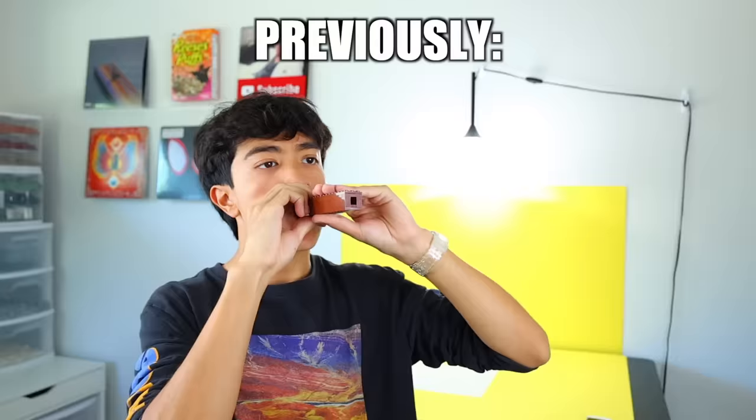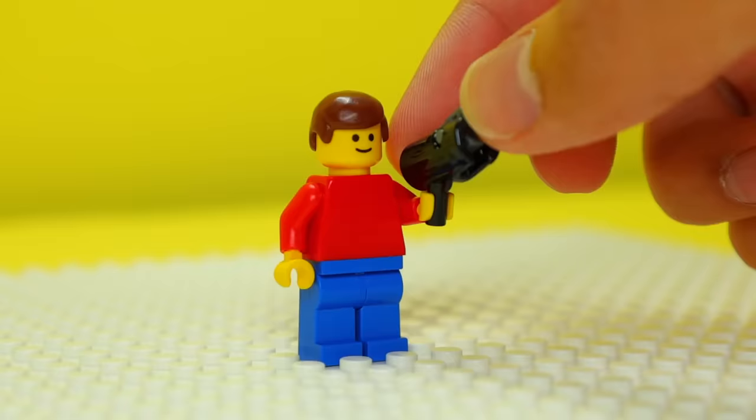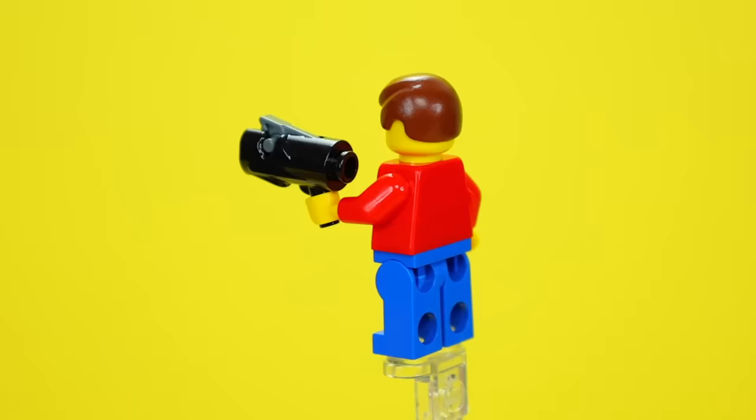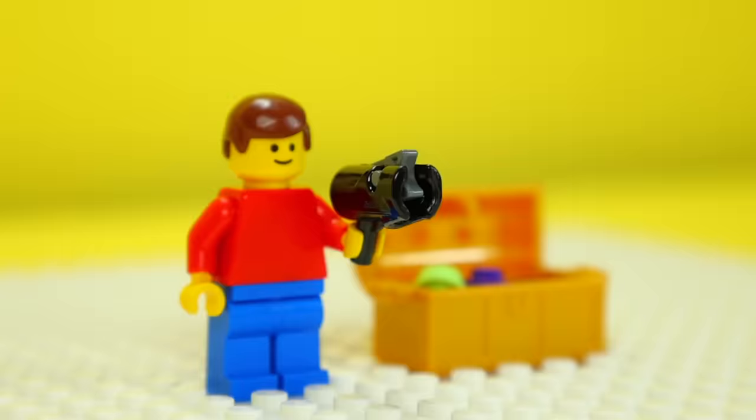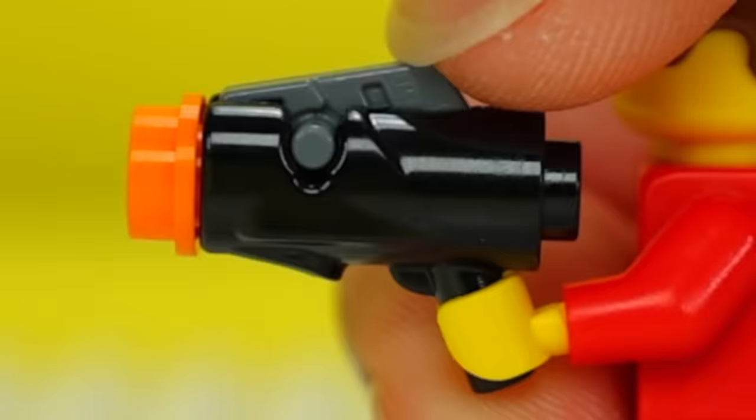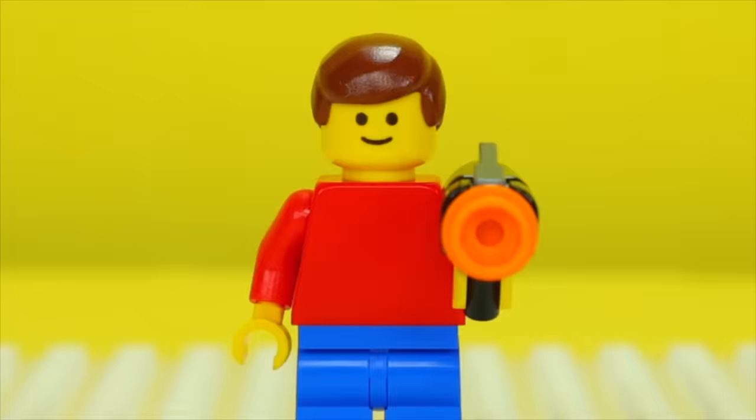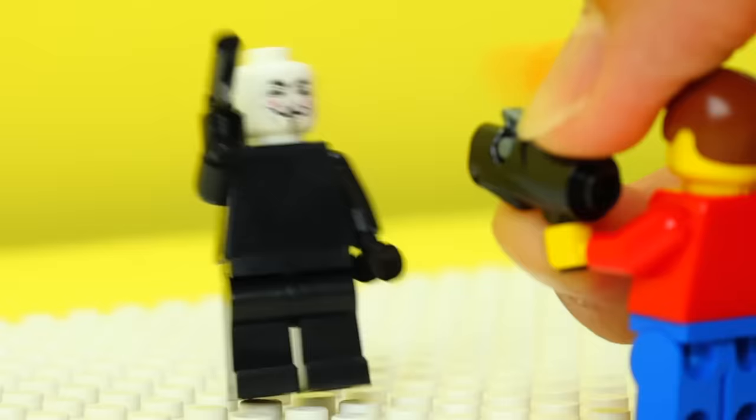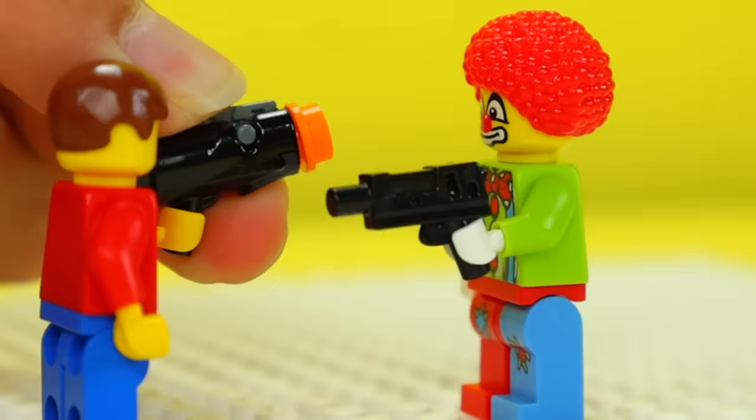Now this whole time we've been talking about life-size Lego weapons, but what about tiny Lego weapons for something like a minifig? This one's called a stud shooter, and like the name says, it's a tiny gun that can shoot a Lego stud. So let's see if it can take down some minifigs. Yes, it can.